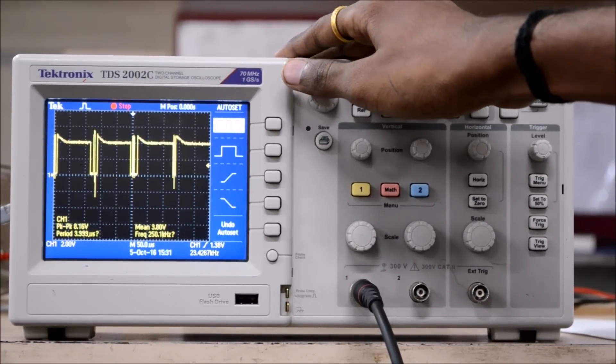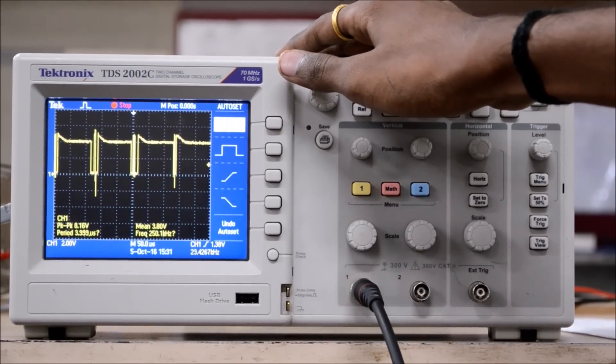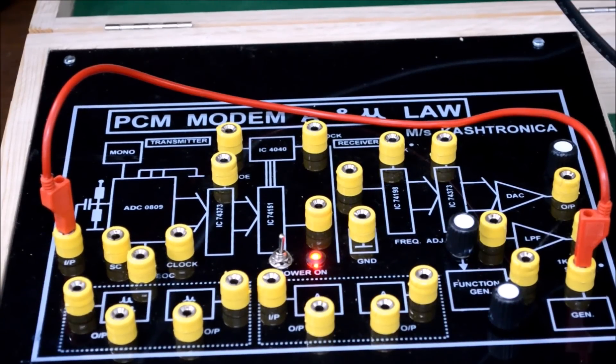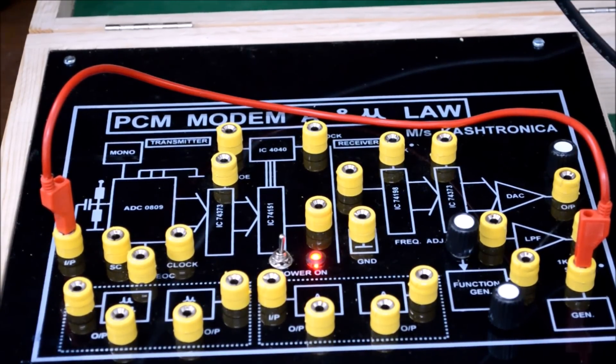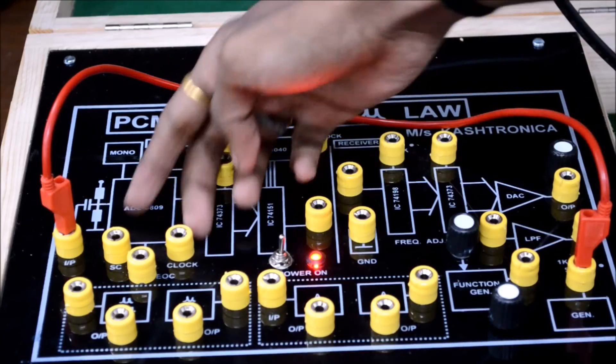So 7 channels could be sent simultaneously using TDM technology in this PCM. The next step is to finding the conversion time of ADC. For that, you have to use the 2 ports given on this board.